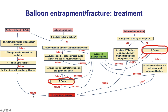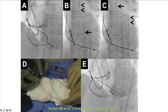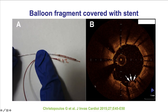Another option is snaring, which is especially useful if the fragment is not inside the guide catheter. In a case where a balloon fractured in the right coronary artery, a Micro Snare Elite was advanced into the distal portion of the guide and snared the fragment of the balloon shaft, which was subsequently removed with a good final result.